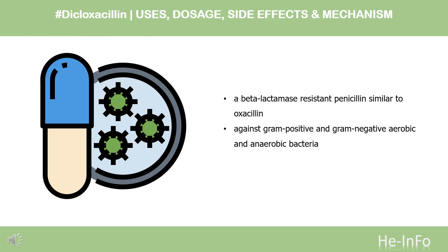Pharmacodynamics. Dicloxacillin is a beta-lactamase-resistant penicillin similar to oxacillin. It has in vitro activity against gram-positive and gram-negative aerobic and anaerobic bacteria. The bactericidal activity of dicloxacillin results from the inhibition of cell wall synthesis, mediated through binding to penicillin-binding proteins (PBPs). Dicloxacillin is stable against hydrolysis by a variety of beta-lactamases, including penicillinases, cephalosporinases, and extended-spectrum beta-lactamases.